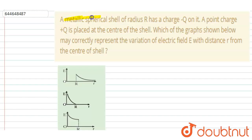Hello everyone. A metallic spherical shell of radius R and charge minus Q on it. A point charge plus Q is placed at the center of the shell. Which of the following graph below may correctly represent the variation of electric field with distance r from the center of the shell.